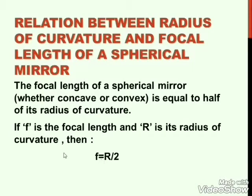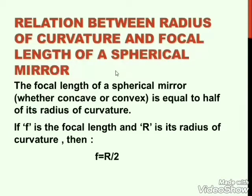Radius of curvature is represented as capital R, and focal length is written as small f. The focal length of a spherical mirror, whether concave or convex, is equal to half of its radius of curvature. So f = R/2. R is the radius of curvature — the distance between pole P and centre of curvature C — and f is the focal length.